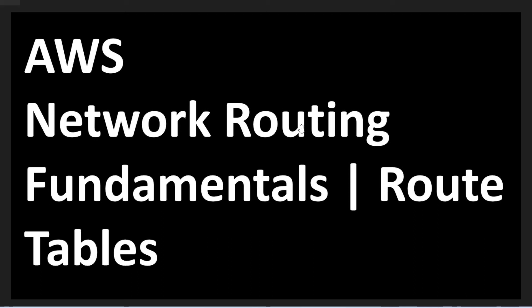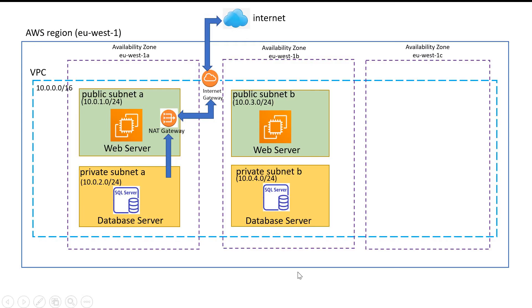Hello everyone, welcome to my channel. In this video I will talk about AWS network routing fundamentals and how route tables work in AWS. In the previous video we saw a basic diagram where we understood AWS regions, VPCs, availability zones, public subnets, private subnets, and how private subnets can access the internet through a NAT gateway and internet gateway. I will provide a link to that video in the description box.